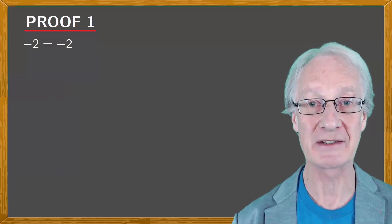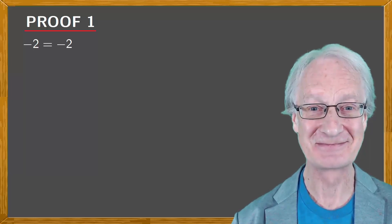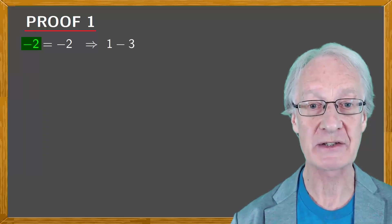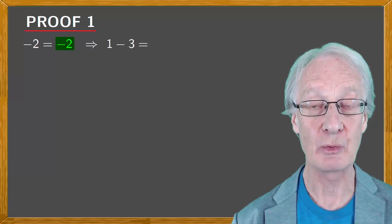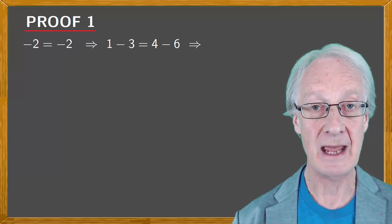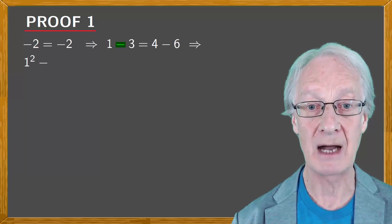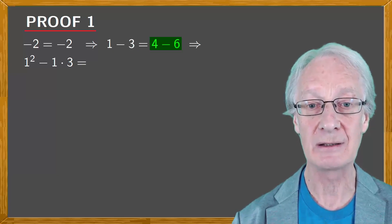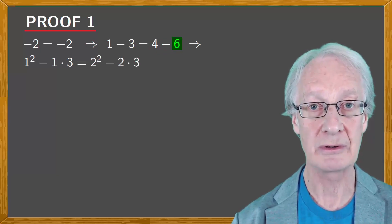Anyway, let's get on with our demonstrations. First, we'll start with something as clear as minus two equals minus two. We replace the first minus two with one minus three, and the second minus two with four minus six. Next, we replace one minus three by one squared minus one times three, and the right-hand side we write as two squared minus two times three.